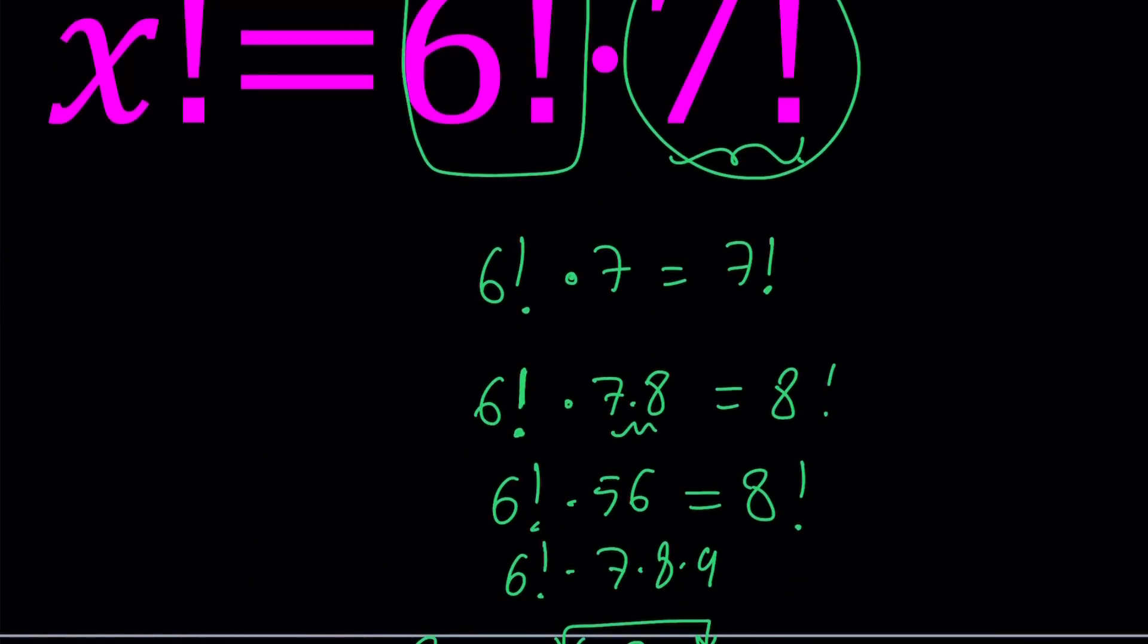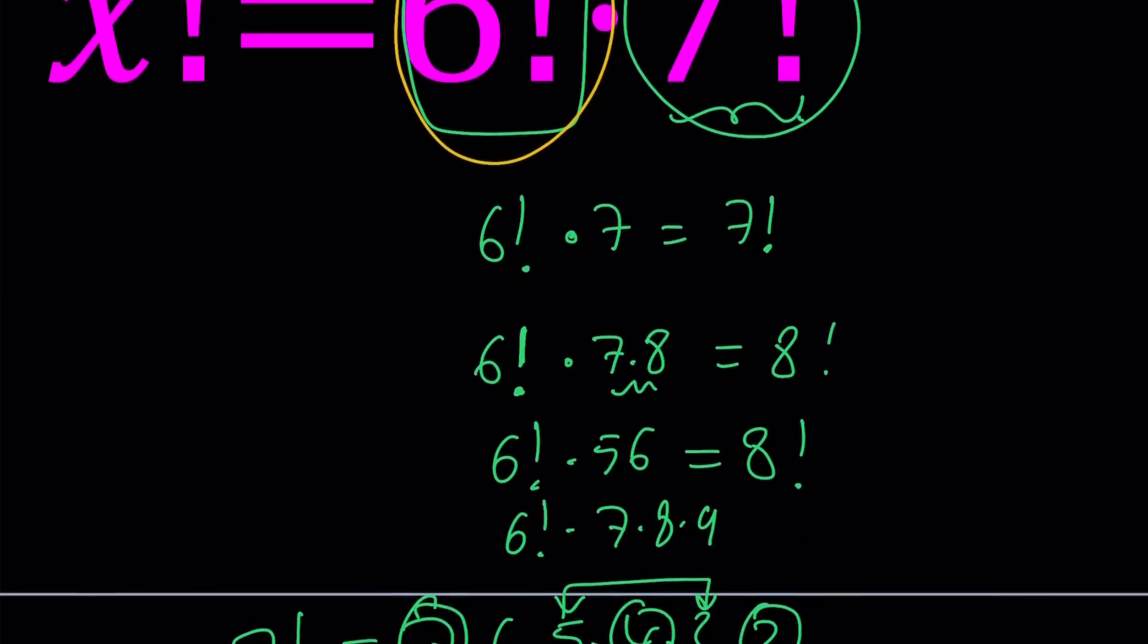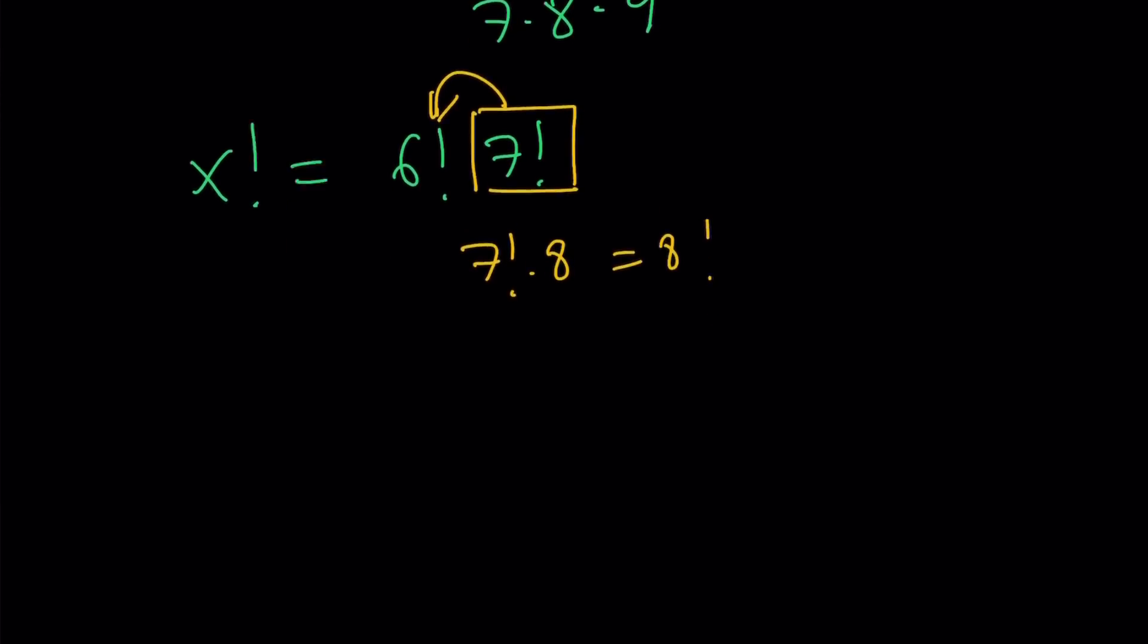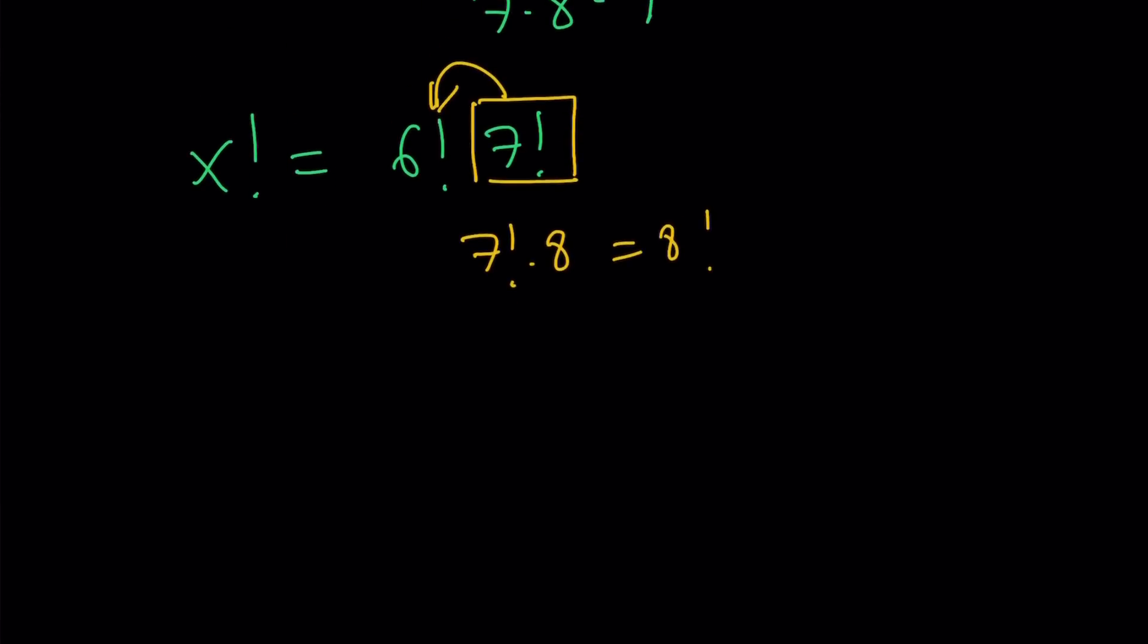Remember, with our first approach, we put aside 6 factorial and looked for numbers like 7, 7 times 8, 7 times 8 times 9. This time, we're looking from a different perspective. So for example, if I could multiply by 8, but 6 factorial does not equal 8. So here's what I need to think about.